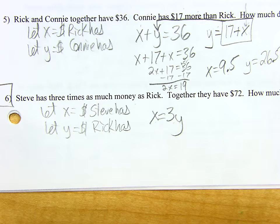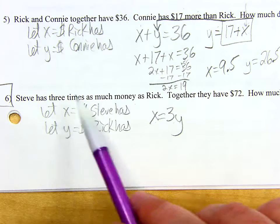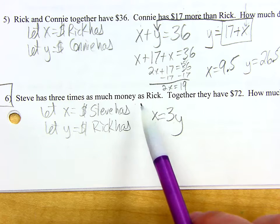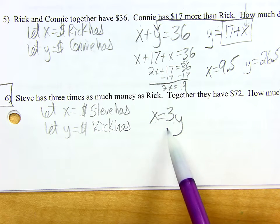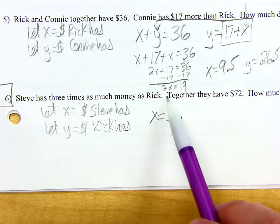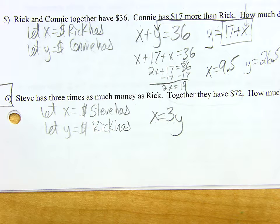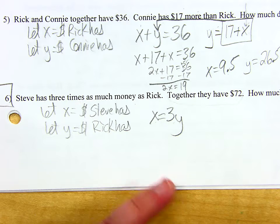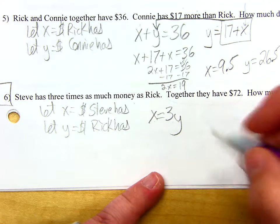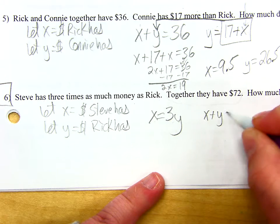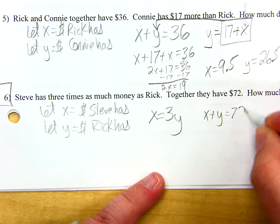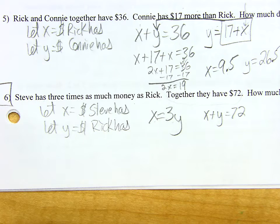Don't make it harder than it has to be — just read the words, change the words into math. Here's another equation: together they have $72. What's my second equation? X plus Y equals 72. That's it — X plus Y equals 72. Together they have $72.